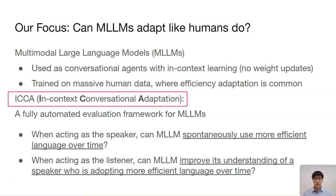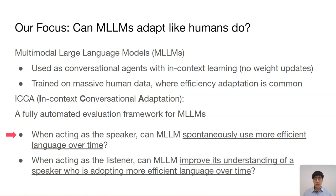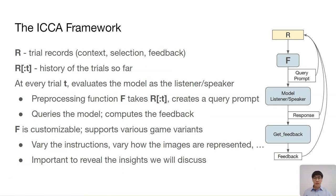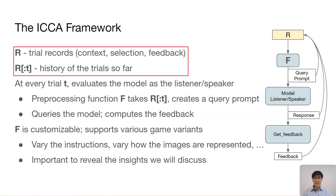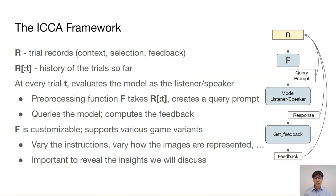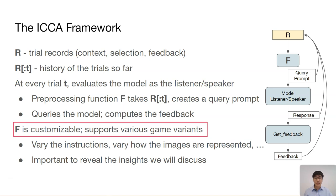To study if this is actually the case, we propose ICA, a fully automated evaluation framework. It tests how well MLLMs can use more efficient language, or understand a partner who is adopting more efficient language over time. Both are abilities humans show and would expect their interlocutors to have. When ICA is running, the system keeps track of the conversation history R. At every trial, it evaluates the model as either the listener or the speaker. It uses a preprocessing function F to create a prompt based on the conversation history so far, queries the model, and then computes the feedback. The function F is easily customizable to support different reference game variants that provide different insights.